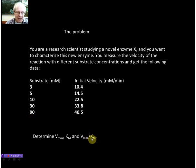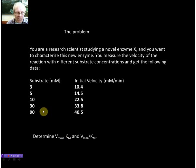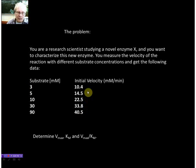What is the Vmax over Km, or in other words, how does the enzyme behave if the substrate concentrations are very low? And last but not least, what is the affinity of the enzyme? What is the Km? You've got your data here, so you use different substrate concentrations and you measured the corresponding initial velocities.